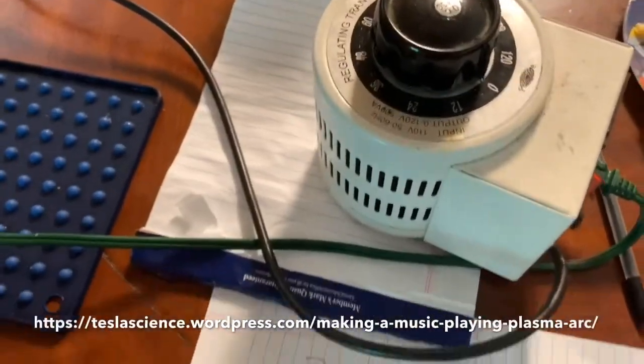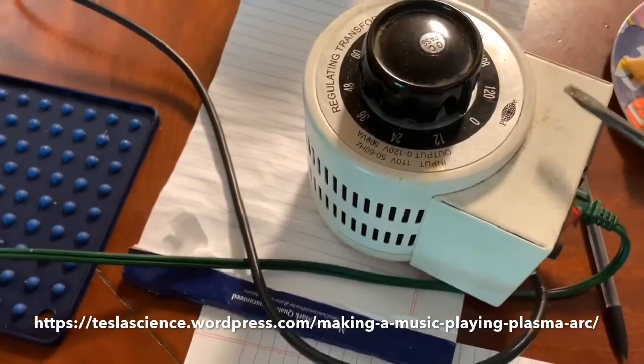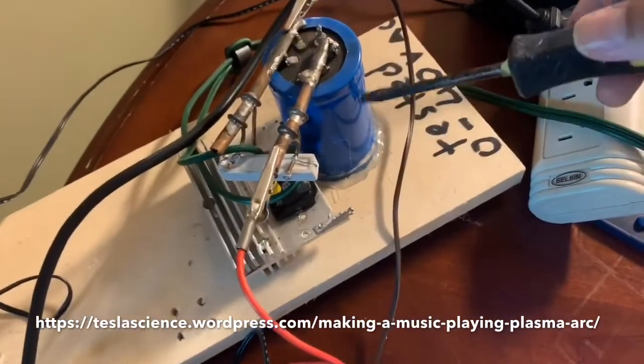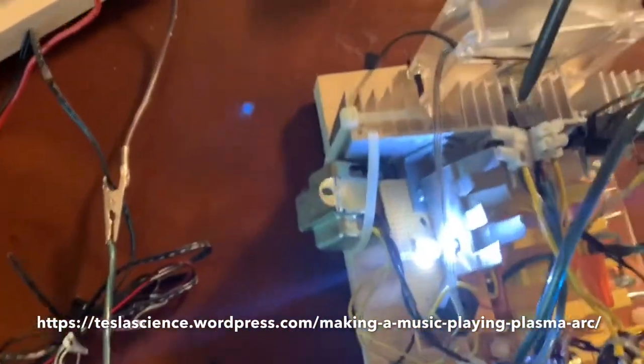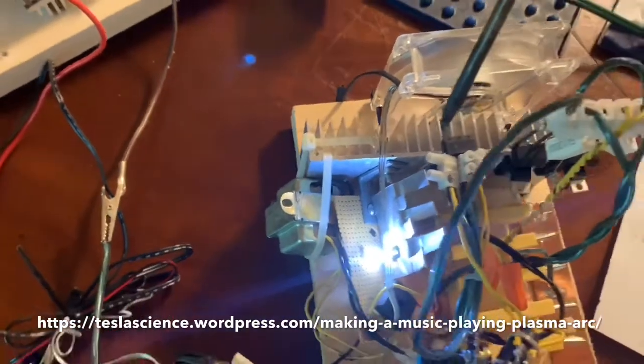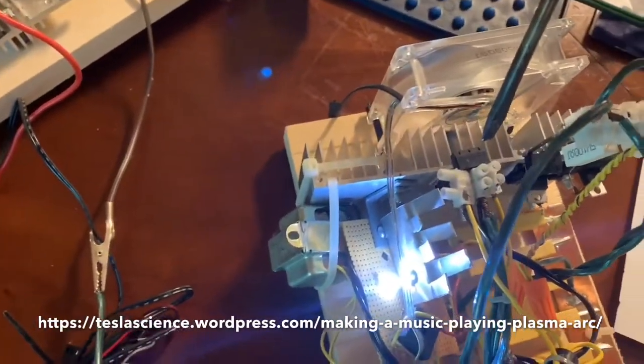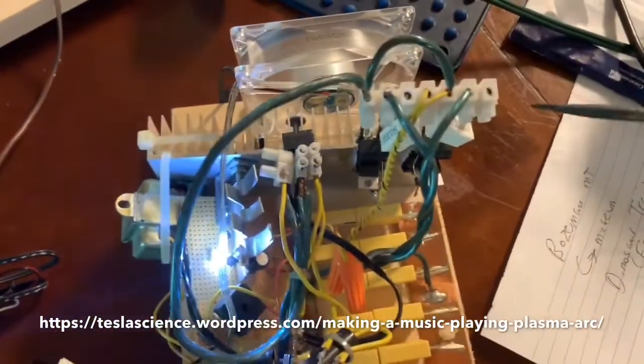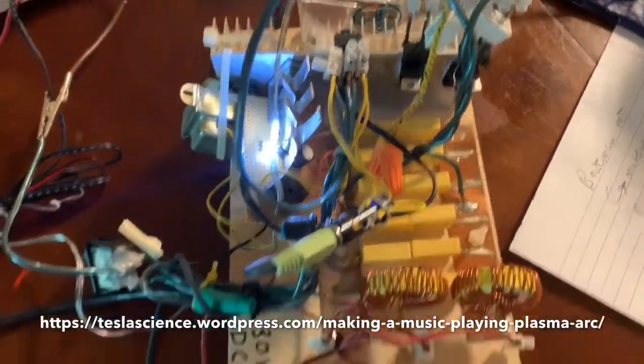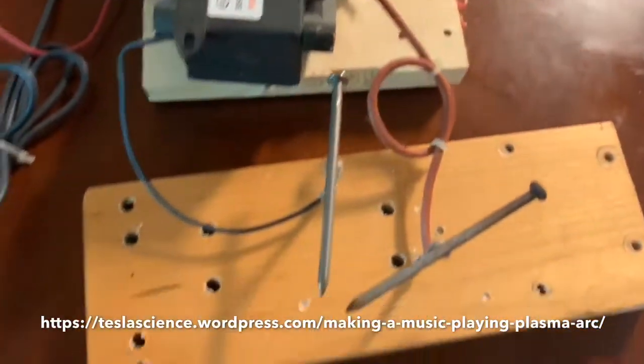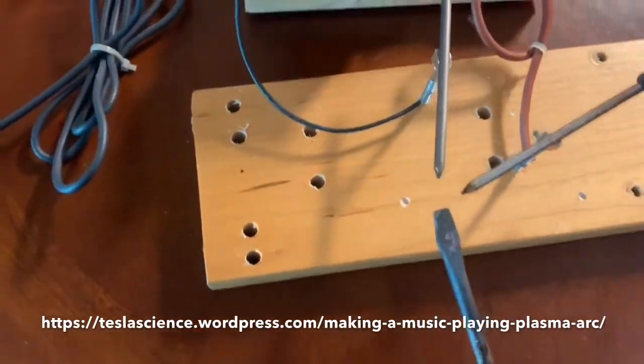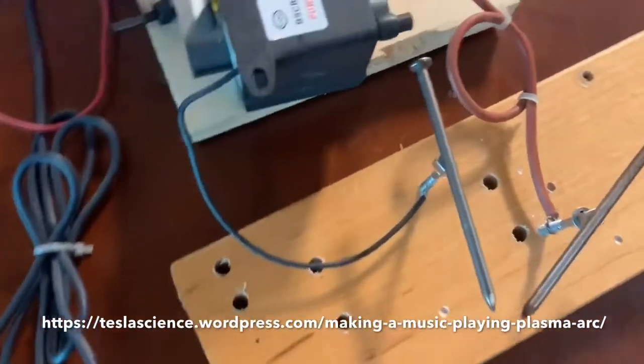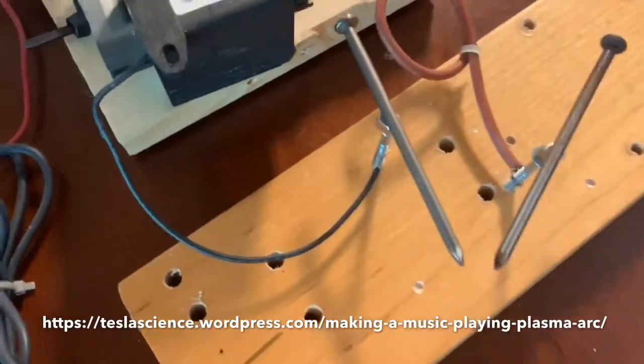So just to recap, we have a Variac for variable AC voltage. We put this into a rectifier and smooth it. We feed that through a transistor over here. The base of that transistor is connected to the audio input. That provides variable voltage into the Mozilla circuit, which provides variable intensity of the plasma arc. And so you hear sound.